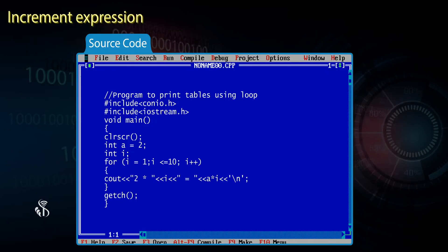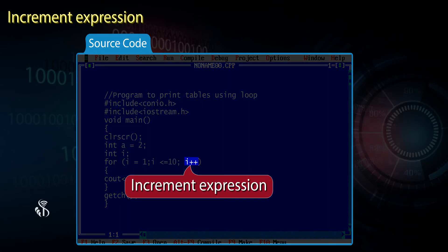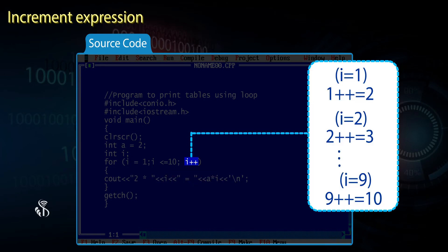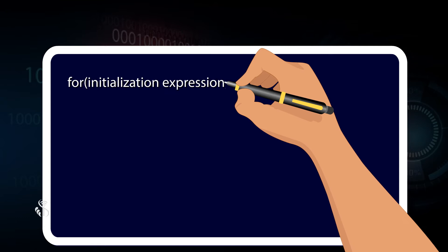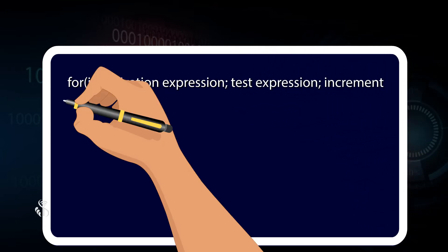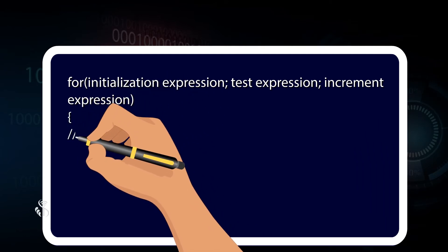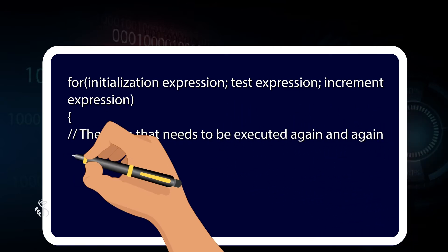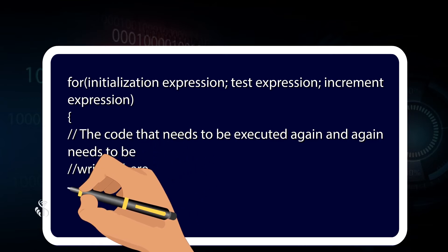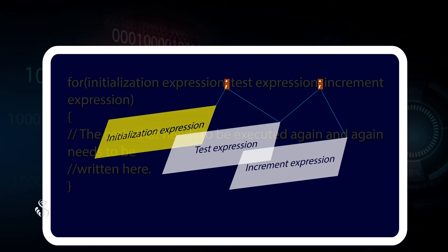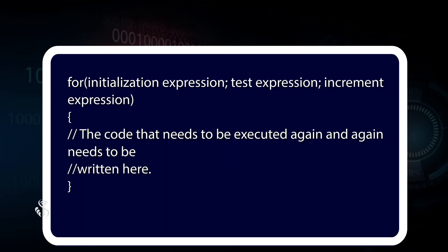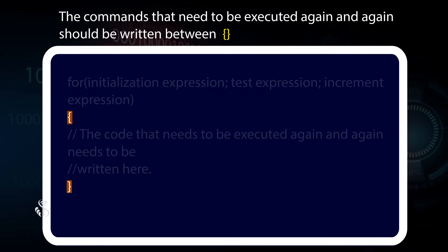The third section is the increment expression. In this expression, the command as to how the value of the loop variable needs to be changed is given. In the given example, the increment expression is I++, which means that each time the loop is executed, the value of I is increased by 1. The syntax is: for (initialization expression; test expression; increment expression) { /* the code that needs to be executed again and again */ }. A semicolon separates the initialization expression from the test expression, and also the test expression from the increment expression.